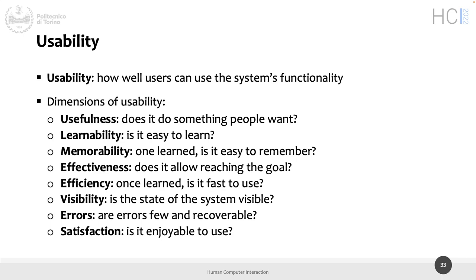Effectiveness: I have a goal — does the system allow me to reach it? Efficiency: once learned, is it fast to use? Am I efficient with the system? Am I effective? Is it useful? And so on — we read the list.